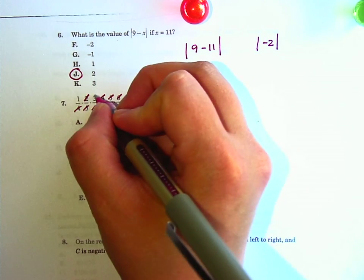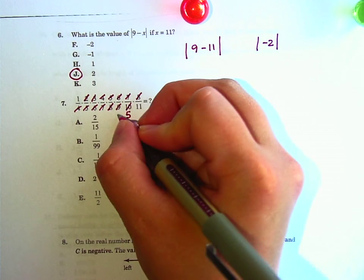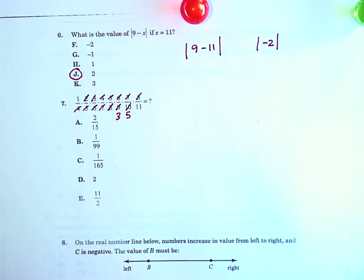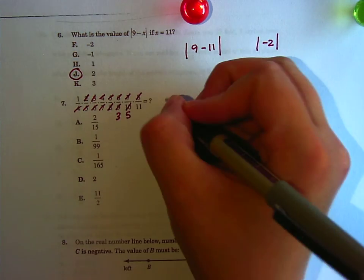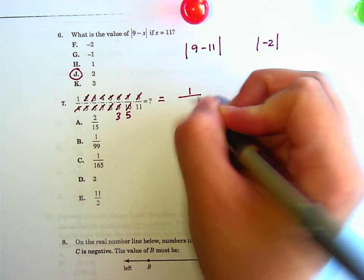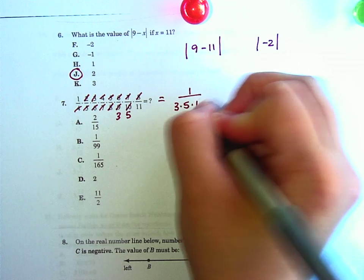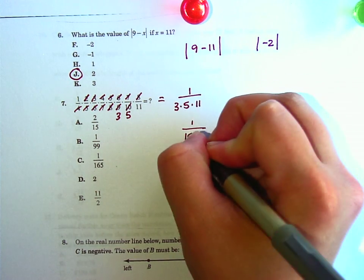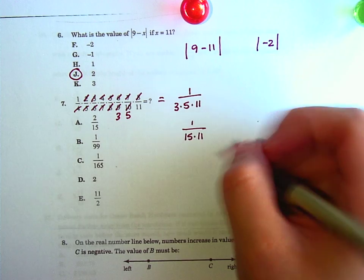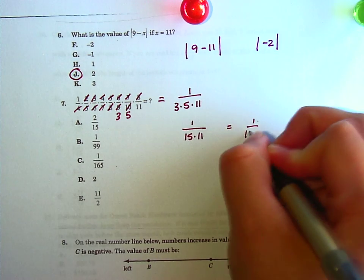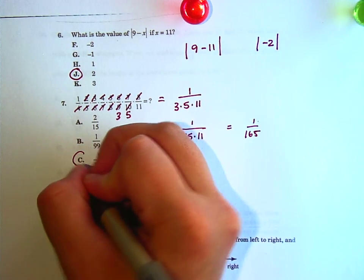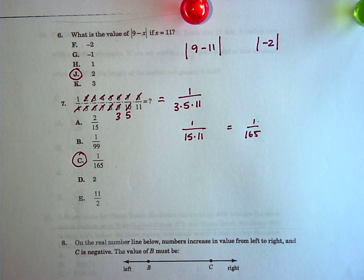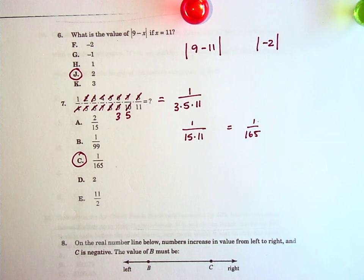There's also a 3 up here, so I can get rid of that 3 and make this 3 instead because 9 divided by 3 is 3. So now on the top, the only numbers I have left is 1, and on the bottom, I have 3 times 5 times 11. 3 times 5 is 15. 15 times 11 is 165. So that's that one, C.